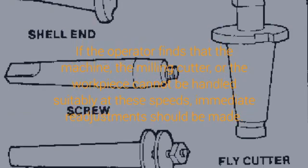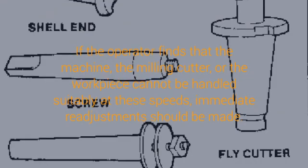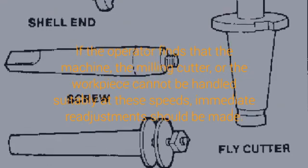The usual mill consists basically of a motor driven spindle which mounts and revolves the milling cutter, and a reciprocating adjustable work table which mounts and feeds the workpiece.